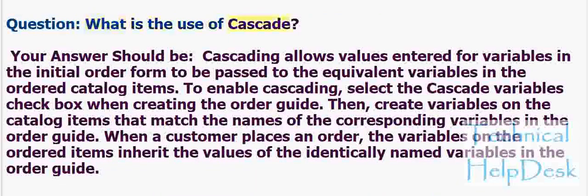Question: What is the use of cascade? Cascading allows values entered for variables in the initial order form to be passed to the equivalent variables in the ordered catalog items. To enable cascading, select the cascade variables checkbox when creating the order guide. Then, create variables on the catalog items that match the names of the corresponding variables in the order guide.